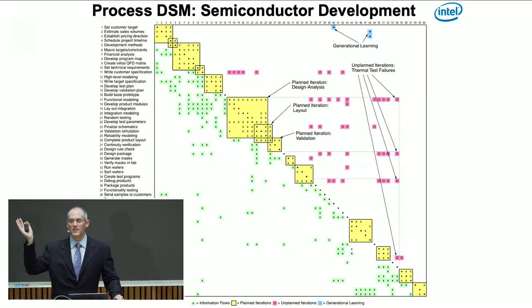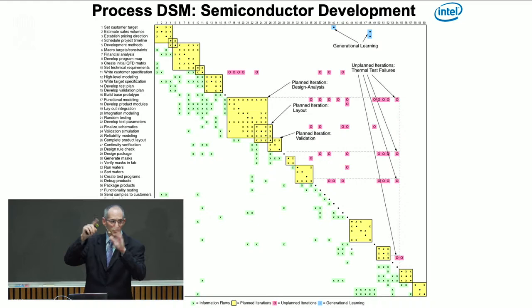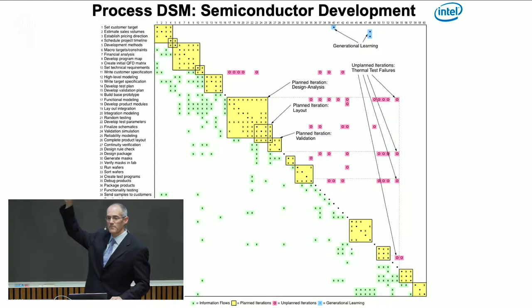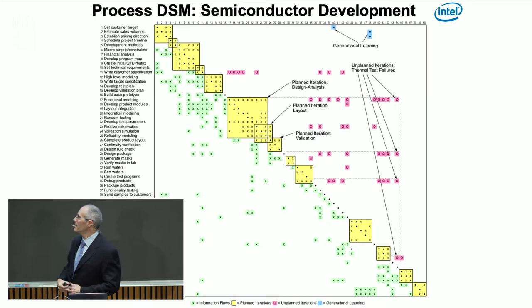First, how to read this diagram. It's a square matrix — the process is decomposed into activities or tasks. On the left-hand side, you read a list of activities from top to bottom, with earlier activities starting the process at the top. At the top you have activities like set customer target, establish pricing direction, figure out the timeline and methods. In the middle are the technical, engineering activities. The top half is what in systems engineering we call the design and decomposition portion of the process.